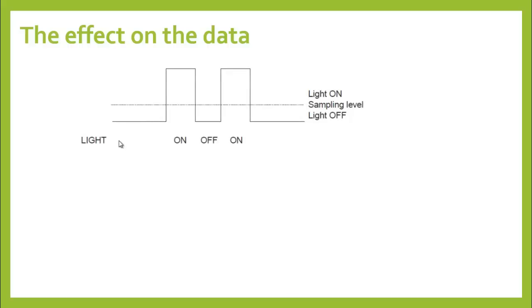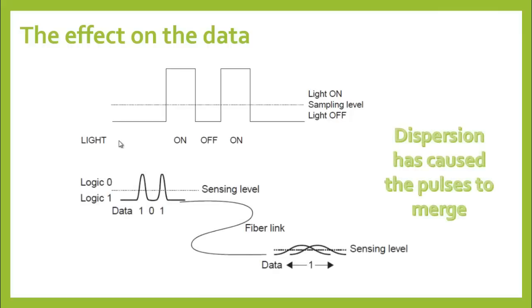These pulses are used to switch a light source, usually an LED or a laser, and the resultant pulses of light are launched into the fiber. Dispersion causes the pulses to spread out and eventually they will blend together and the information will be lost.